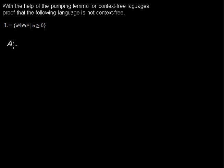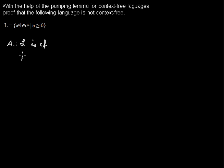We use a proof by contradiction. That means we assume that the language L is context-free. And if L is context-free, then the pumping lemma must hold for L. That means there is an N that is greater or equal to zero.